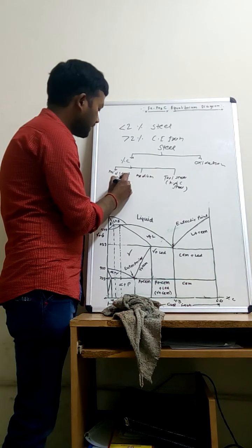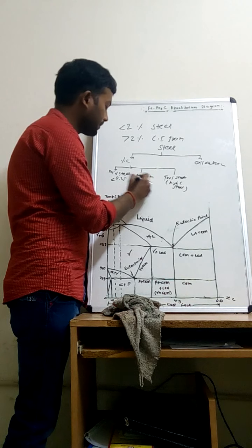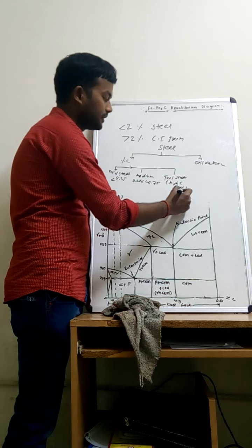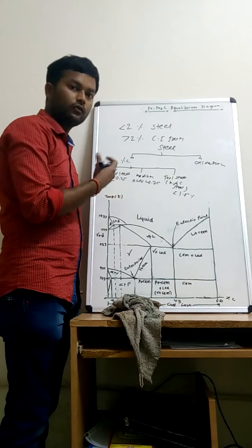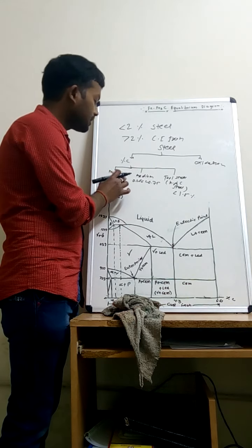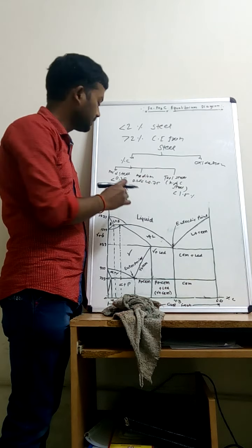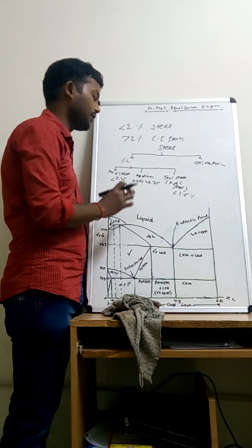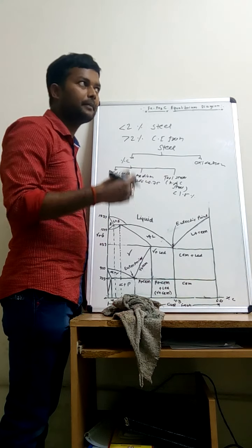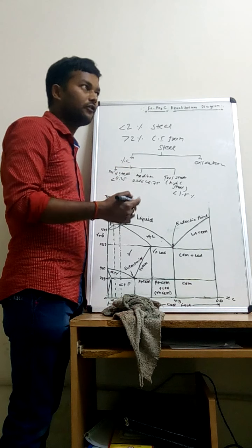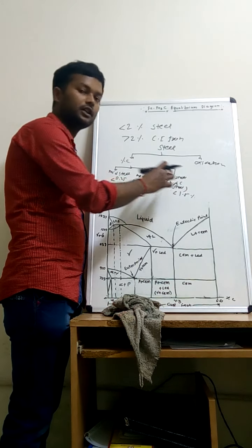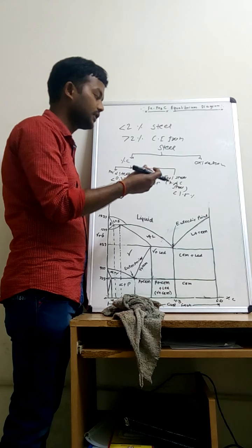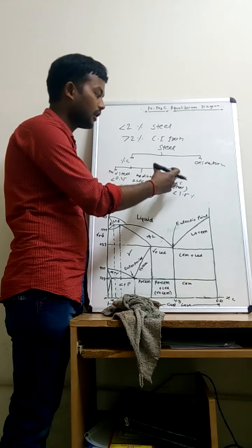In mild steel, the percentage of carbon is less than 0.25%. In medium carbon steel, the percentage of carbon is between 0.25% and 0.75%. When the percentage of carbon is less than 0.55% it is called dual steel. Mild steel is used as a structural product — for example, car structures and aeroplane frames are made from mild steel. All movable products are made from medium carbon steel. All tool products such as chisels, saws, and hammers are made from tool steel.